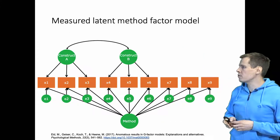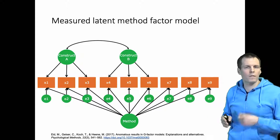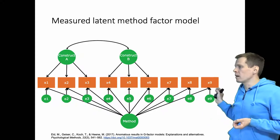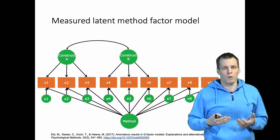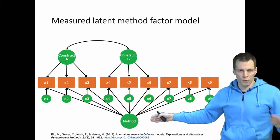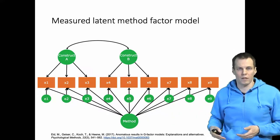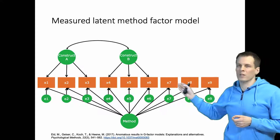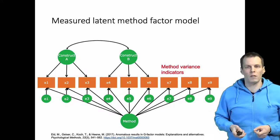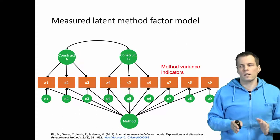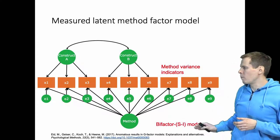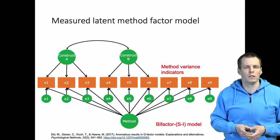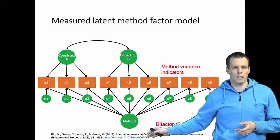We also have the measured latent method factor model, which differs from the marker indicator model in that x7, x8, and x9 would be measures of, for example, social desirability bias, and then the method factor represents social desirability bias as a source of method variation. So it's a directly measured measurement artifact instead of being proxied by a marker variable. This model is identified — it's what I and co-authors called the bi-factor S-minus-I model, and identification is explained in that article.